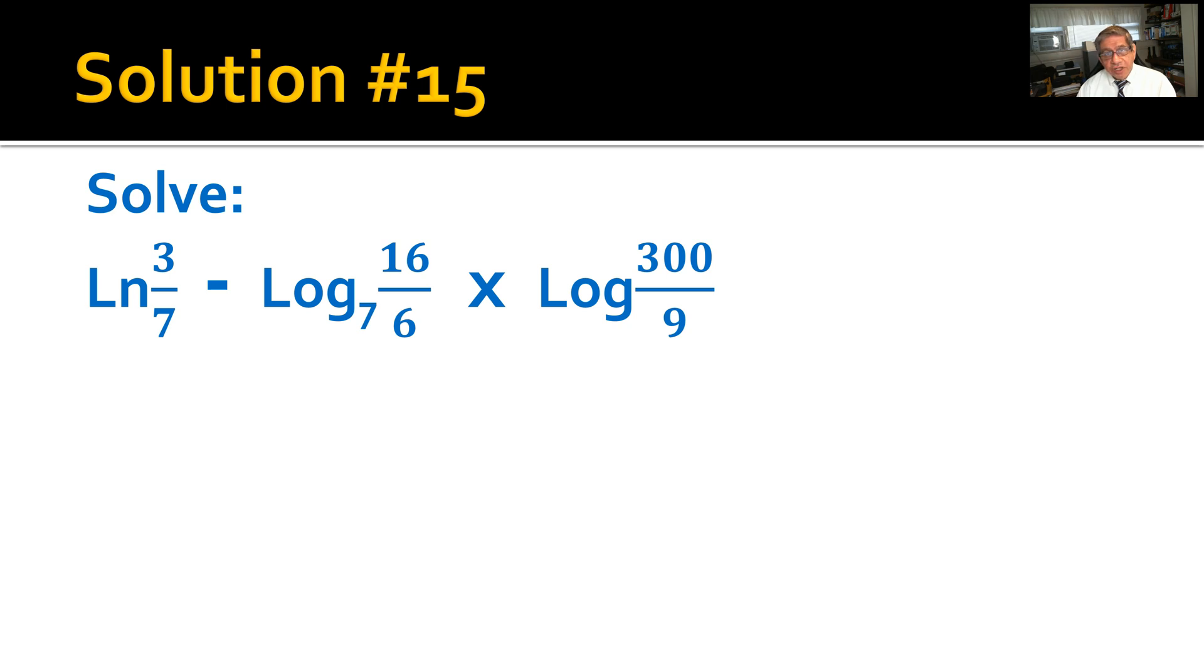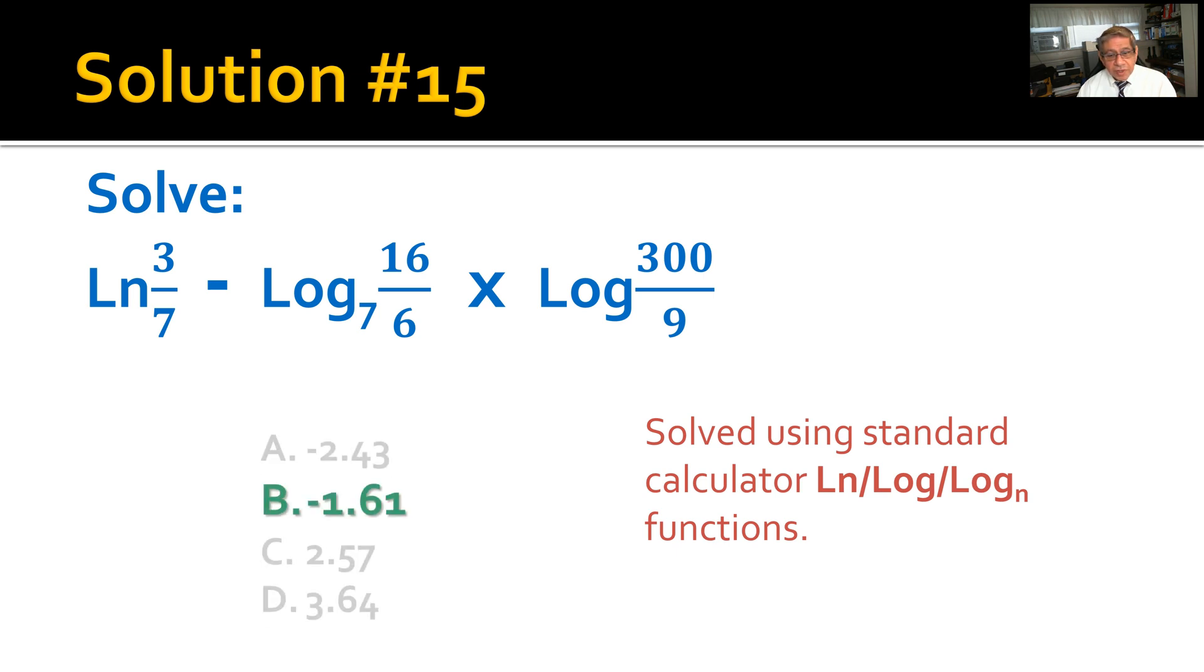Solution number 15: Solve ln(3/7) - log₇(16/6) × log(300/9). Solve using the single key on the calculator for natural log, log, and log to any base you want. The answer comes out to B of the ones given: -1.61, rounded a little, but that's the answer.